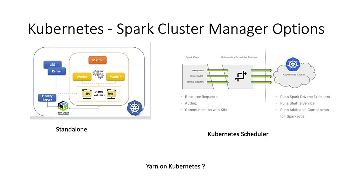There's also the option of running Spark on YARN running on Kubernetes, though it's somewhat redundant since YARN asks Kubernetes for containers and then gives them to Spark. YARN is a very production-ready scheduler, but it runs its own JVM system in containers, adding extra memory footprint to your pods.